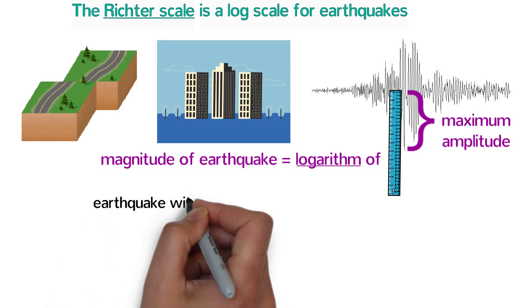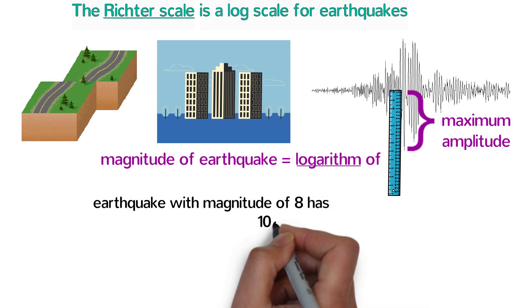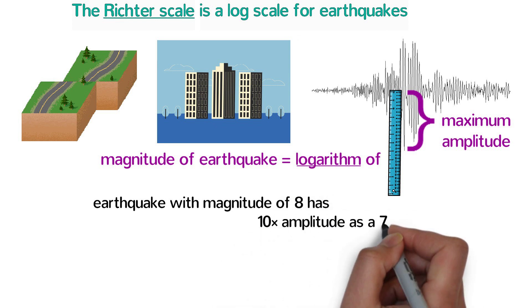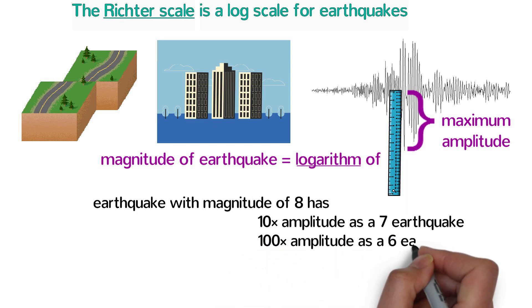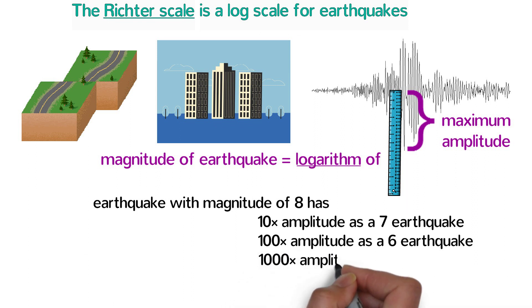So an earthquake with a magnitude of 8 has 10 times the amplitude as an earthquake with a magnitude of 7, 100 times the amplitude as an earthquake with a magnitude of 6, and 1,000 times the amplitude as an earthquake with a magnitude of 5.